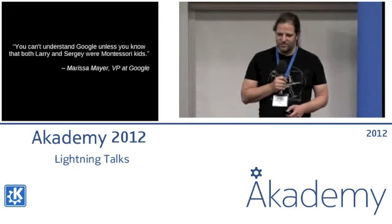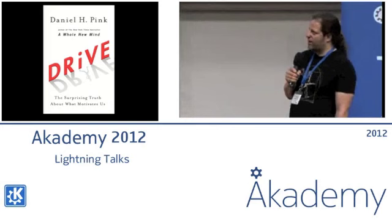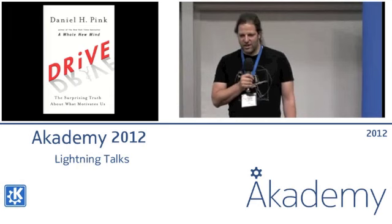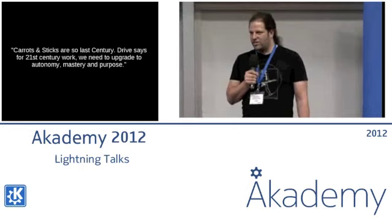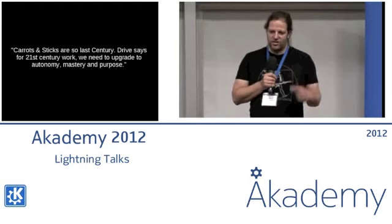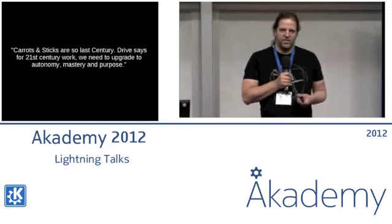Daniel Pink made the connection in his book Drive, where he writes about motivation. He says that for the tasks we have to do in this century, extrinsic motivation is not good enough — we need intrinsic motivation. And what you need for that is autonomy, mastery, and purpose. That's something you get taught at Montessori schools, and it's also what you use in open source communities.